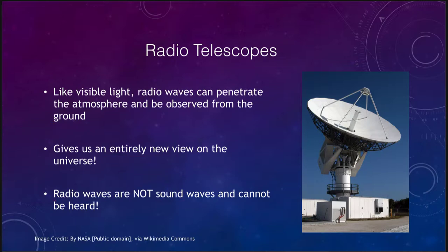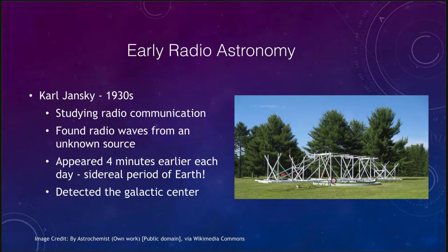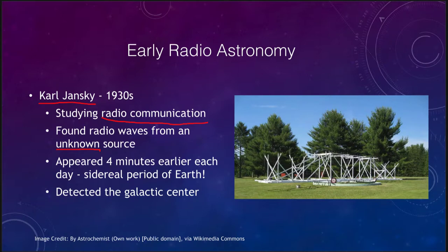Let's look at the beginnings of radio astronomy. Starting back in the 1930s, Carl Jansky built some of the very early radio telescopes. Now you can see here that this does not look anything like any telescope we've looked at before — it's essentially a big antenna, and that was how he was able to detect radio waves from space. He was studying radio communication on Earth and found radio waves from some unknown source, finding that he was detecting them four minutes earlier each day, coming around every 23 hours and 56 minutes.